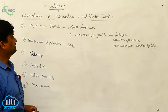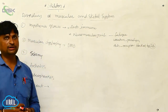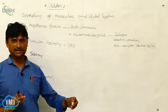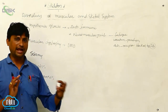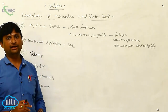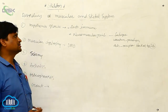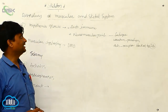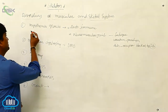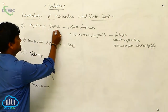Now we will look at disorders of the muscular and skeletal system. After completing all the concepts of muscle contraction and the skeletal system, we are going to cover the disorders associated with the skeletal and muscular system. The first one is myasthenia gravis.